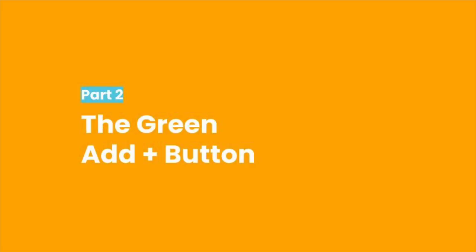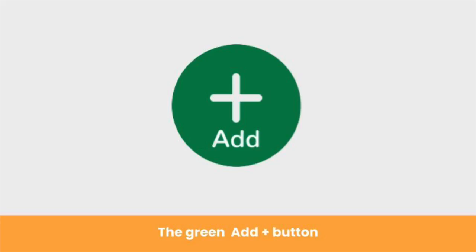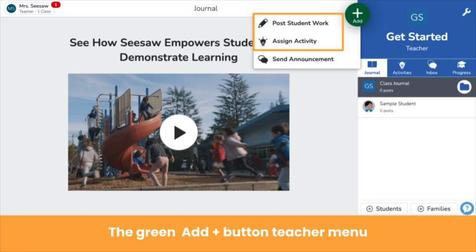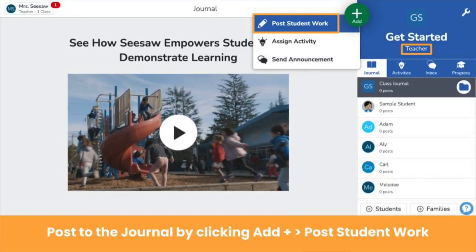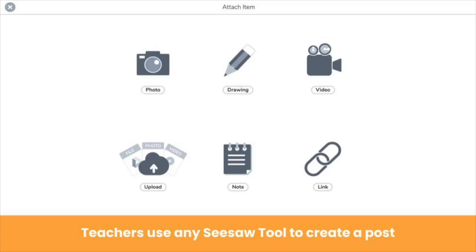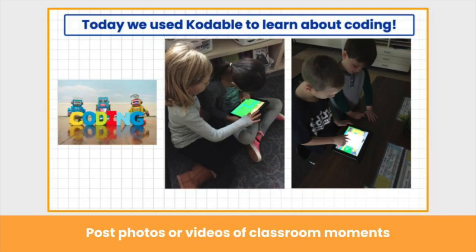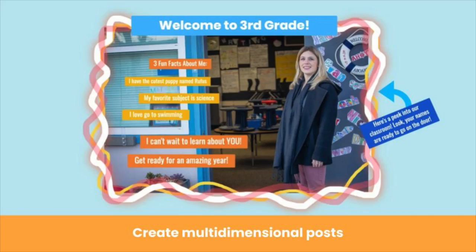Now that you're logged in, let's explore essential Seesaw tools, starting with the green add button. The green add button is where it all begins. When teachers click the green add button, you see this menu. We'll focus on the first two options in this video. To post to the class journal as a teacher, click the green add button, then post student work. You have access to all Seesaw learning tools to create your post. For example, use the photo or video tool to share classroom moments. Or use a combination of tools to create multi-dimensional announcements, resources, discussion questions, and more.